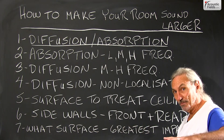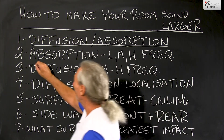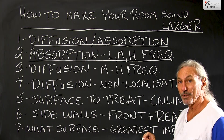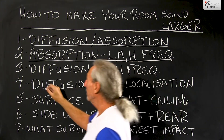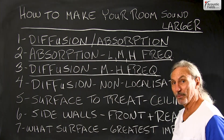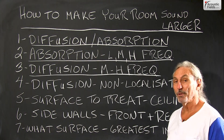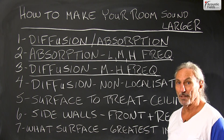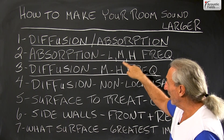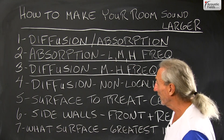So we use diffusion and absorption technology to deal with reflections — it's kind of an inverse flip. What do we use absorption for? Low, middle, and high frequencies. What do we use diffusion for? Middle and high frequencies. We don't diffuse low frequencies — low frequencies are reflected. So we want to keep the domains of the treatment in mind when we're moving through things.